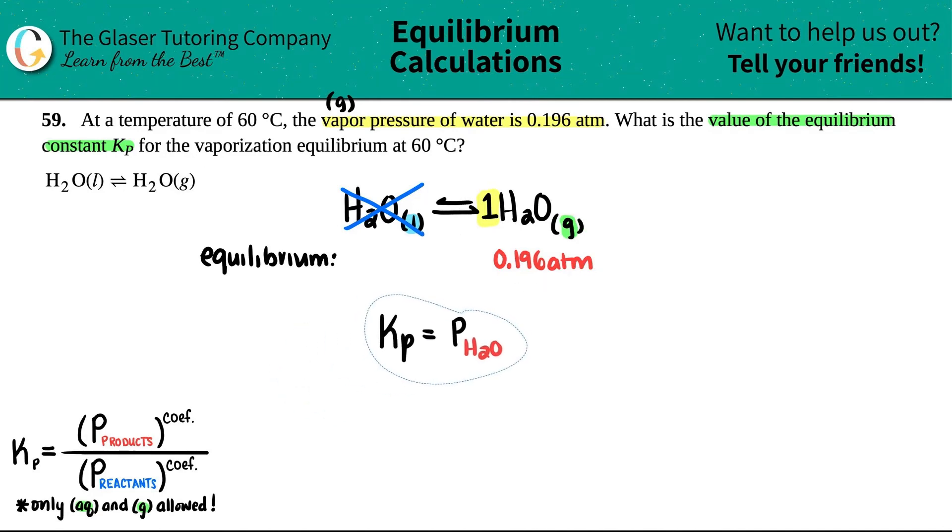That was pretty simple, guys. Let's just put this over here. Kp equals 0.196. I didn't need to square anything. I didn't even need to do any math. The only thing though, is there's two things that I want to say. The first thing is that any k value has no units. It is unitless. So even though there was ATM here, the k values, you strip away that unit. So it would just be 0.196.